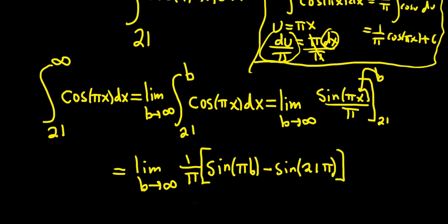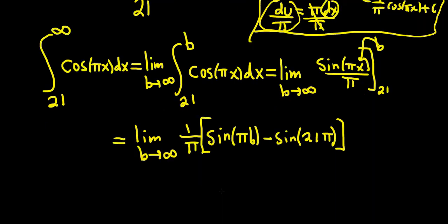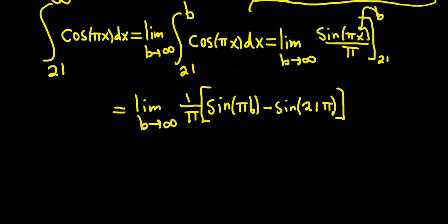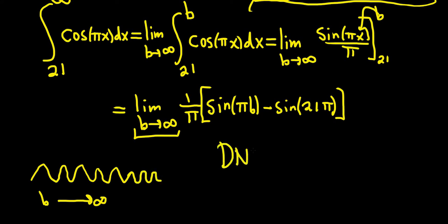But the sine of pi b, where b is approaching infinity—sine is a wave function. It oscillates. So as b approaches infinity, the function doesn't approach anything. It just bounces back and forth forever. So this limit is not going to exist—DNE on this limit.